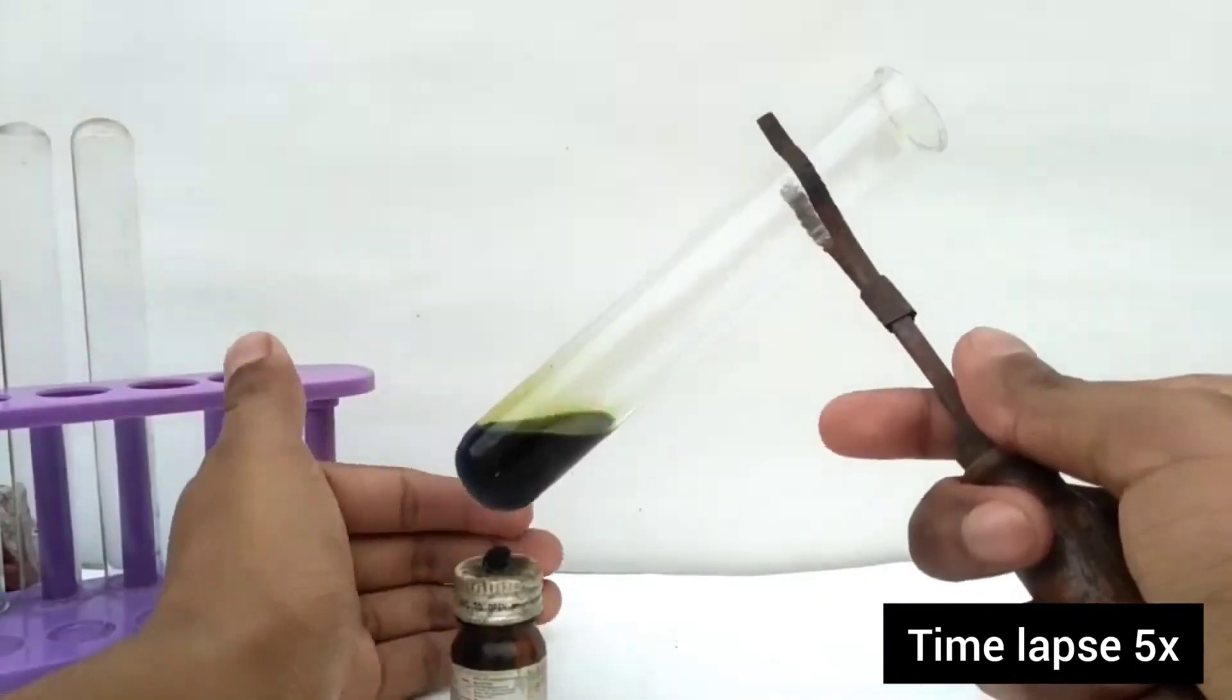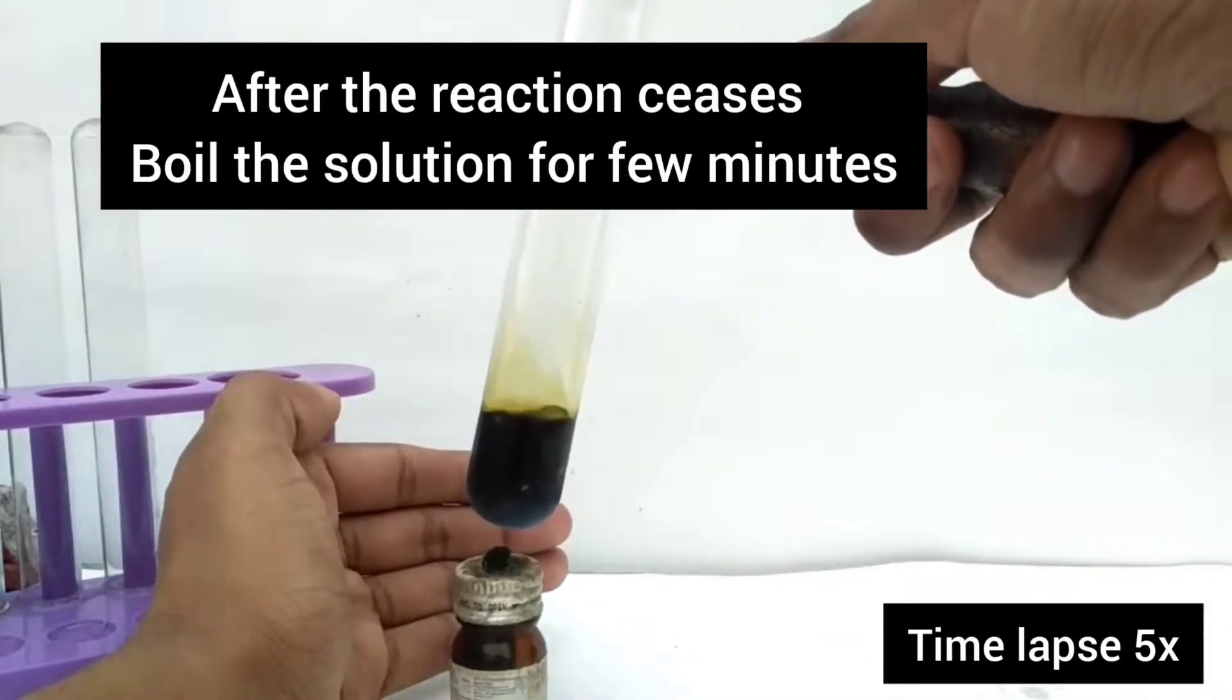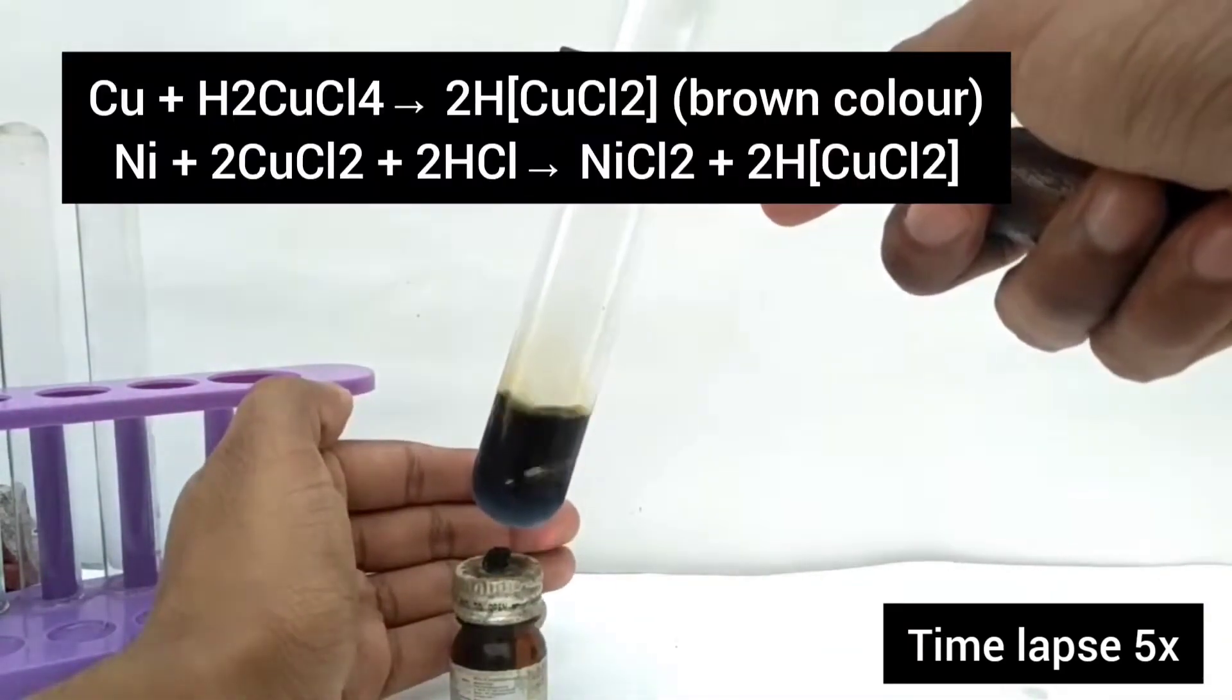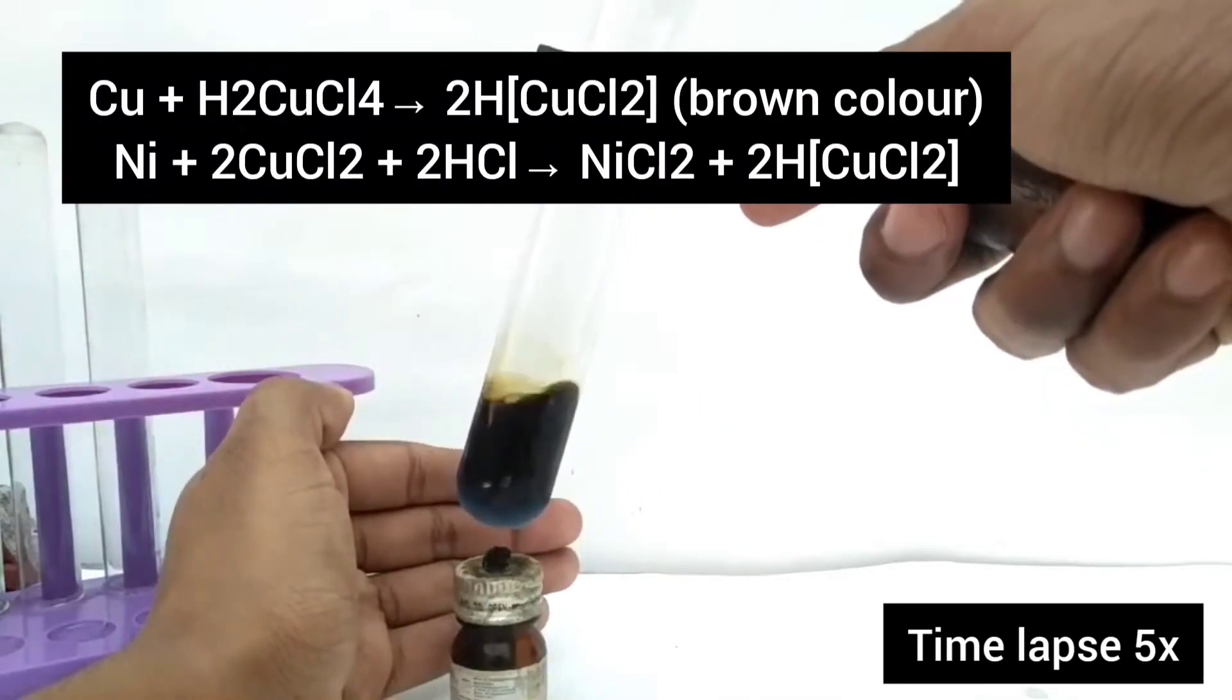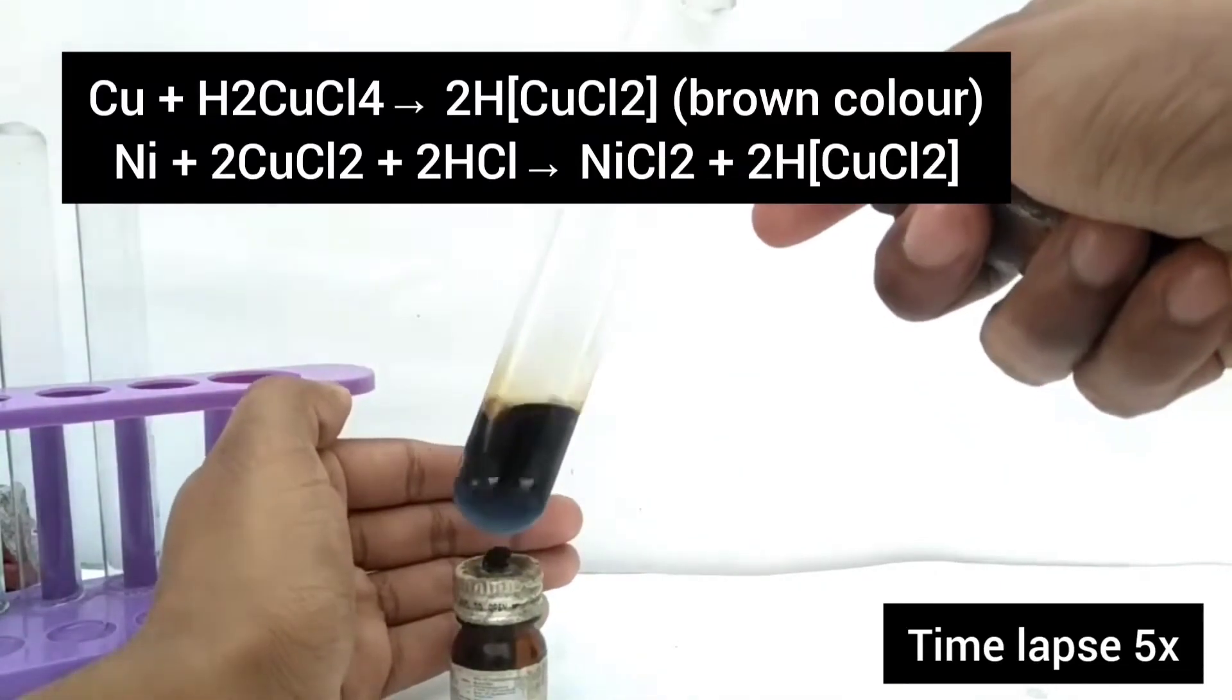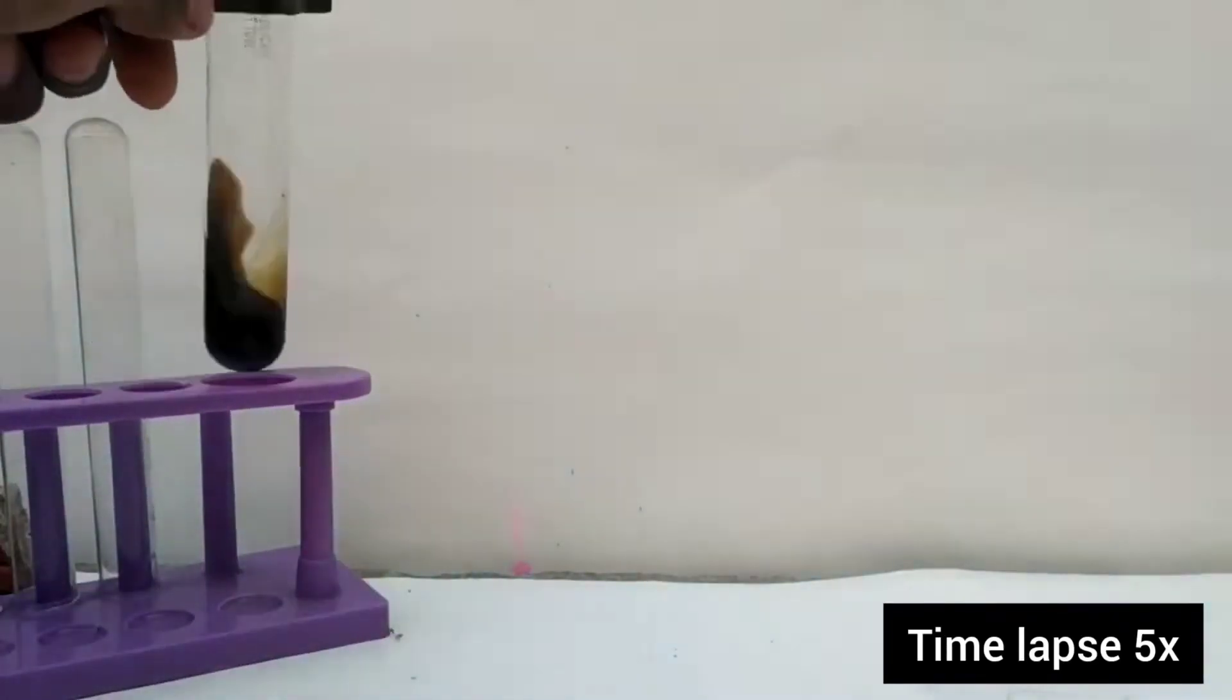Now after the reaction is over, we will heat the solution to boiling for several minutes. As you can see, the green solution is turning into brown solution. That is due to the formation of cuprous chloride complex which is brown in color.